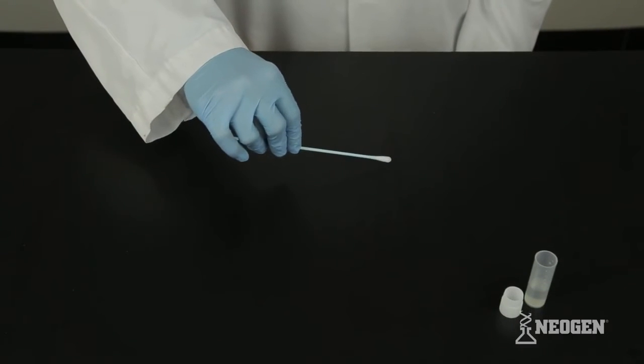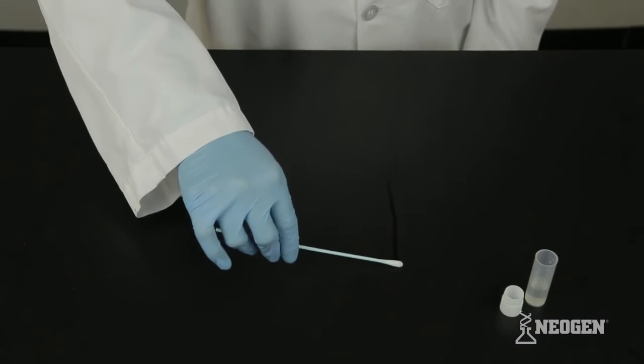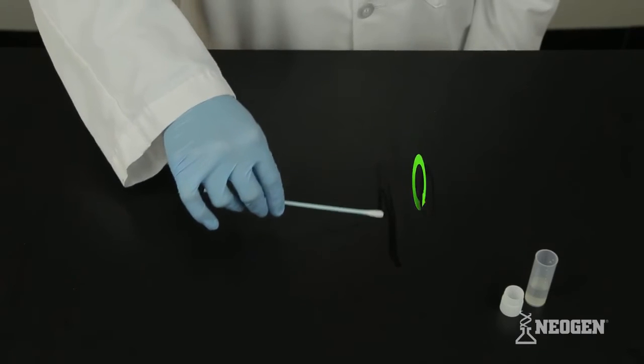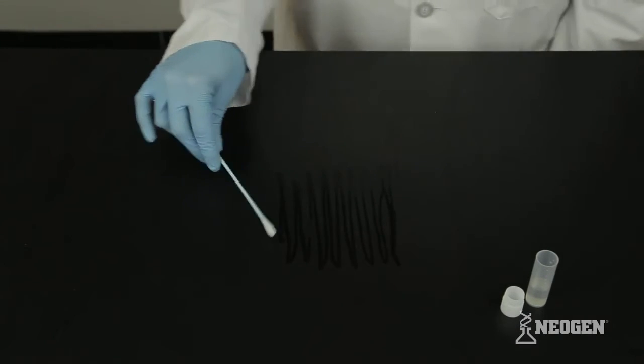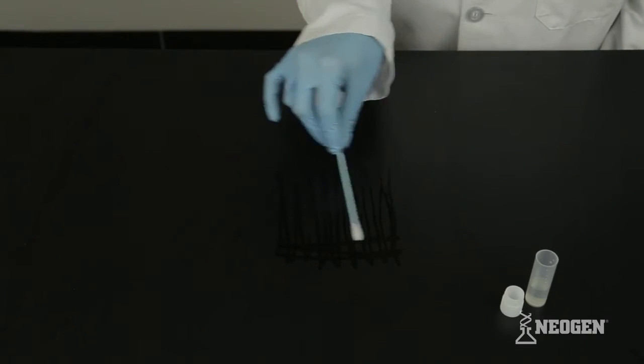Swab your 10 by 10 centimeter area using a crosshatch technique while revolving a swab on the surface. Repeat the swabbing procedure using movements at right angles to those used in the first swabbing.